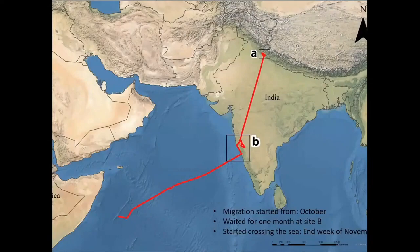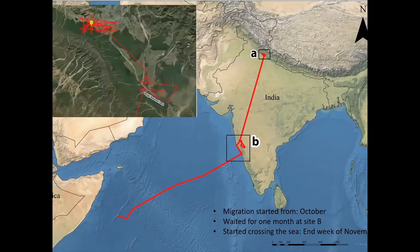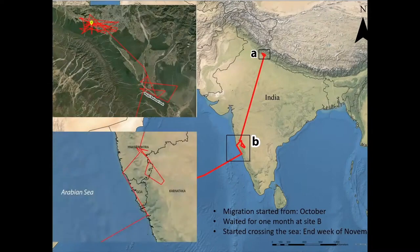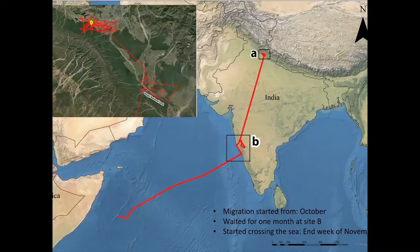Both birds started giving locations the day they were tagged. However, one individual stopped responding after one month while still in Dehradun. The second bird kept transmitting data. It started its migration from Dehradun in mid-October, with a one-day stop near Rajaji National Park. It then moved southward and had a stopover of one month near Maharashtra. From Maharashtra, it went to the coast of Goa and stayed there for one month. At the end of November, it started crossing the Arabian Sea, and the last location received was near the coast of Somalia.